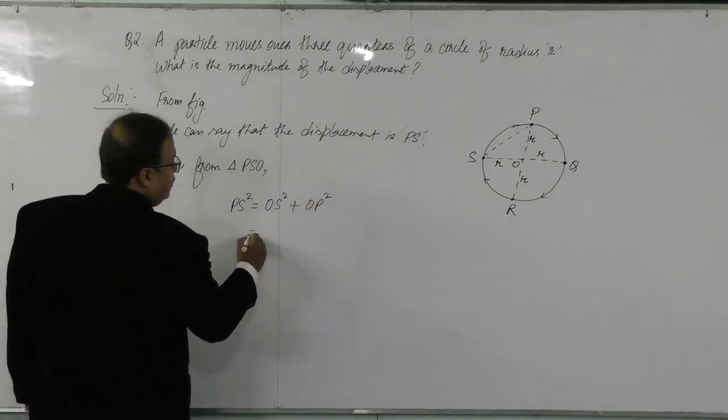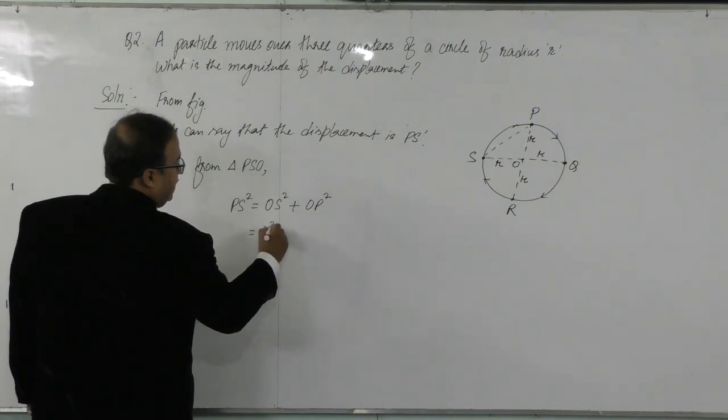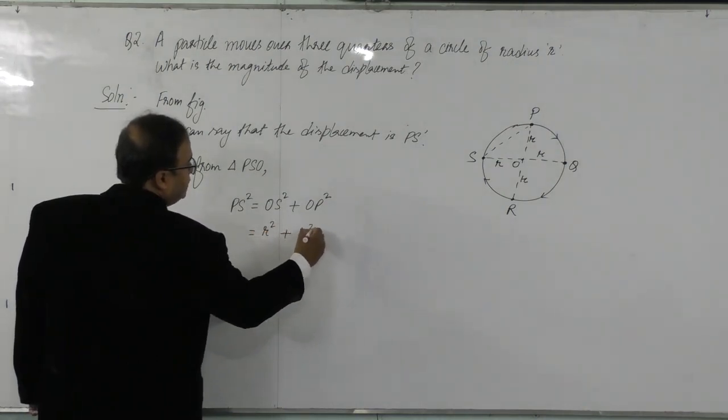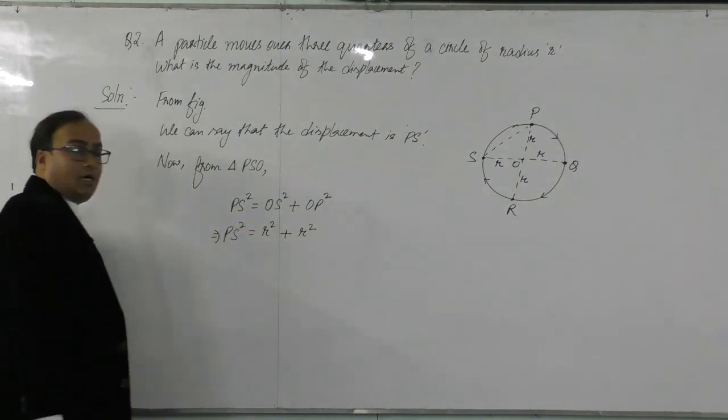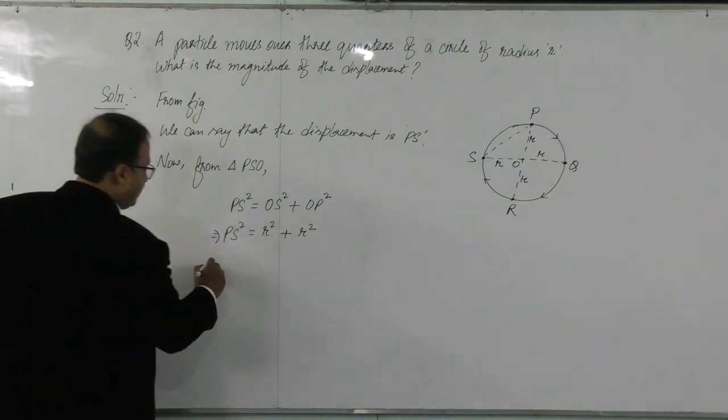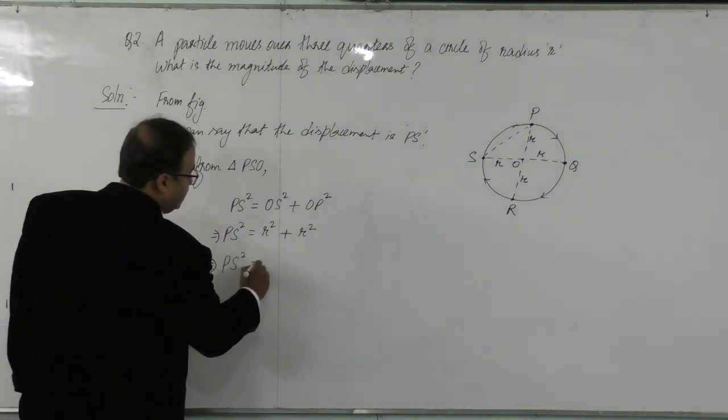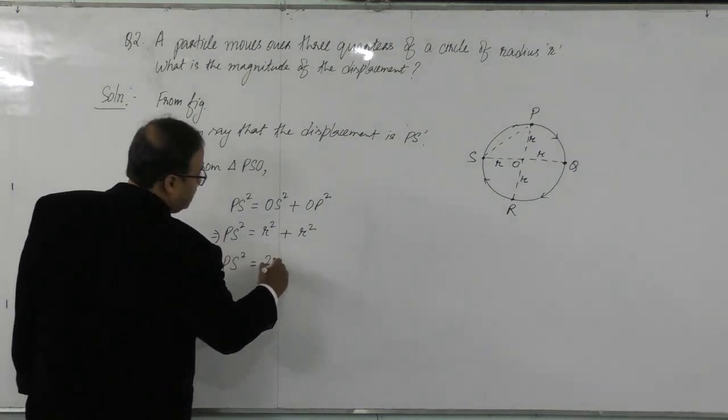Now, OS square is r square, OP square is also r square. So PS square is equals to r square plus r square. So PS square is equals to 2r square.